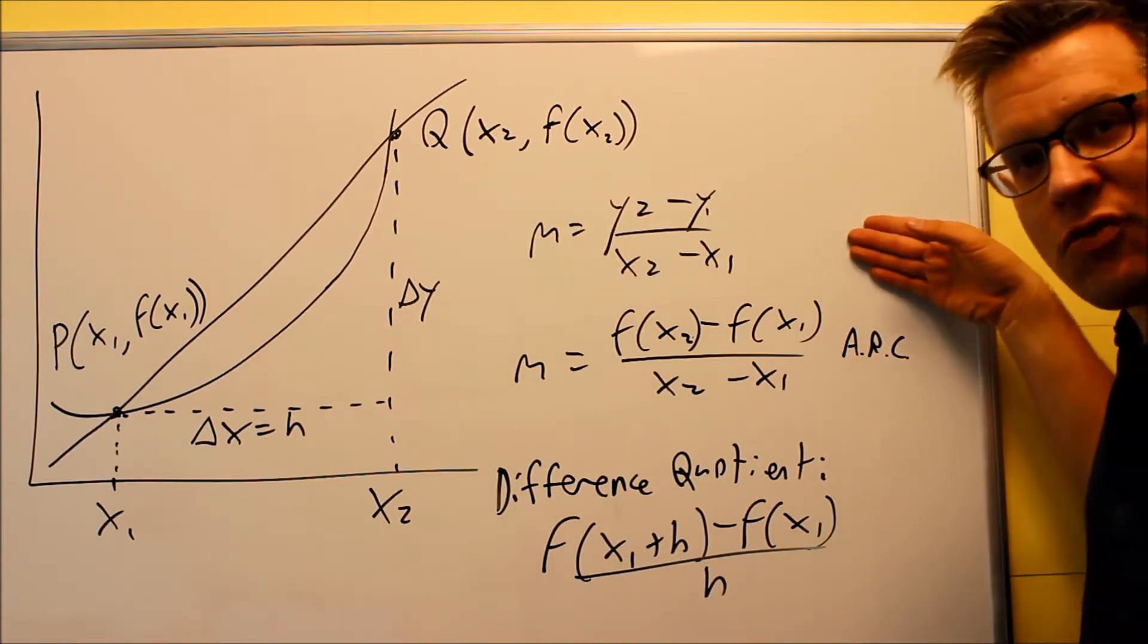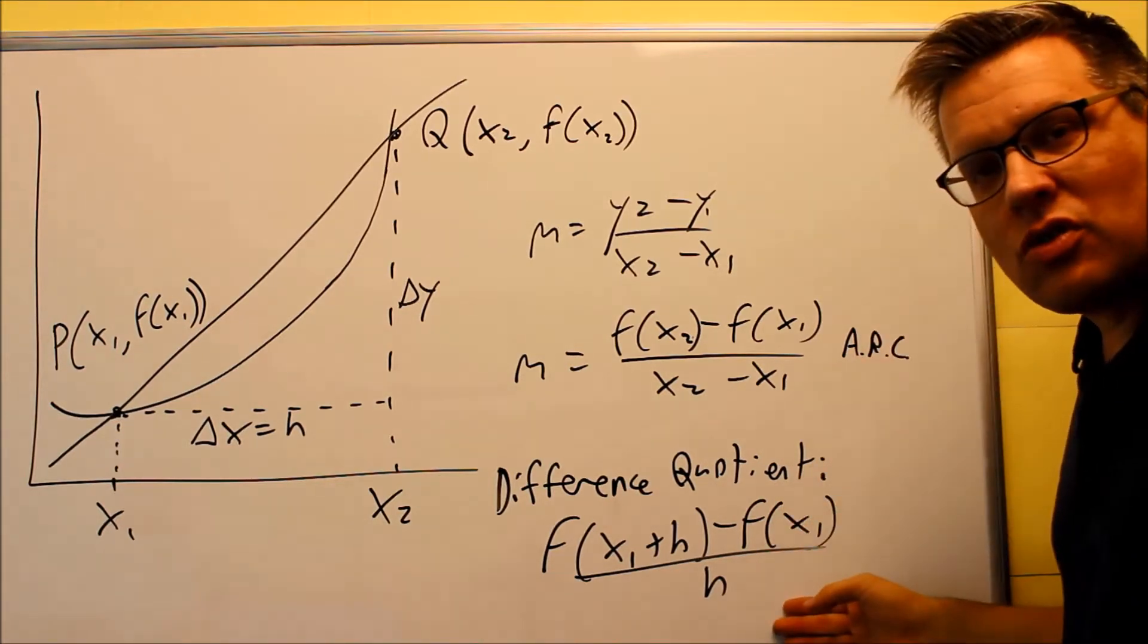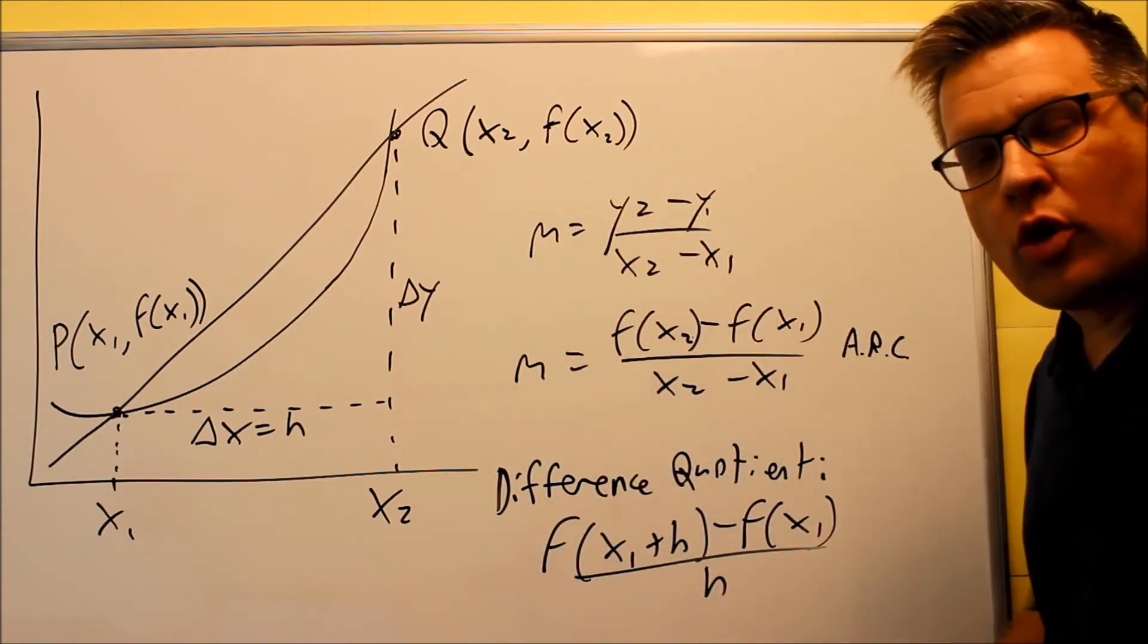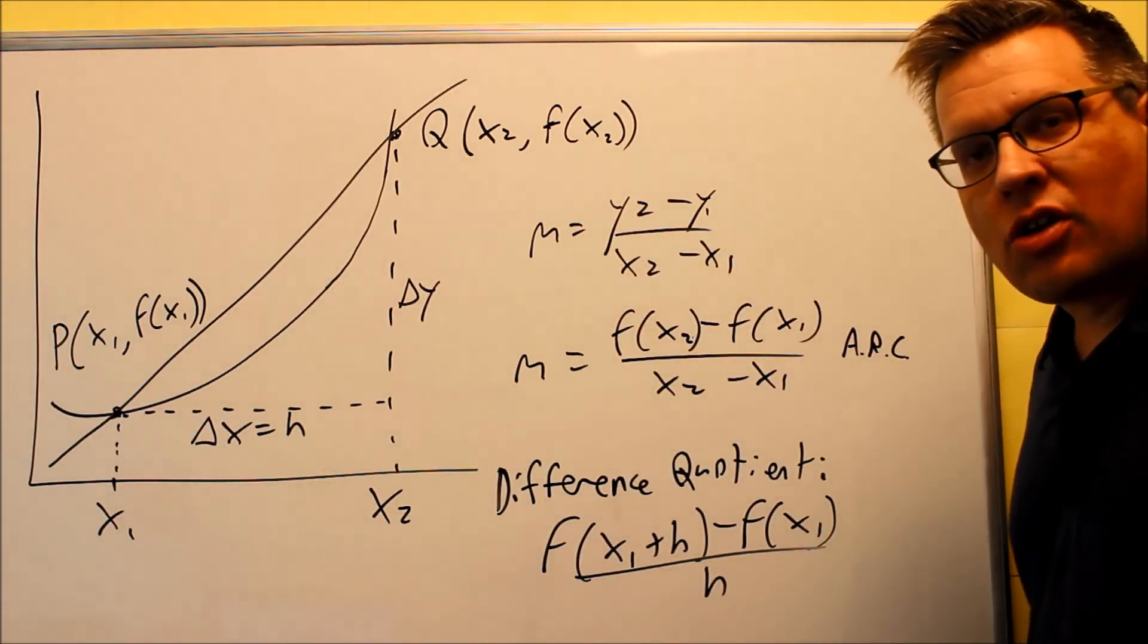So average rate of change is this formula and we have difference quotient is this one here. And this is the basis for what we're eventually going to be getting into. That's called the derivative.